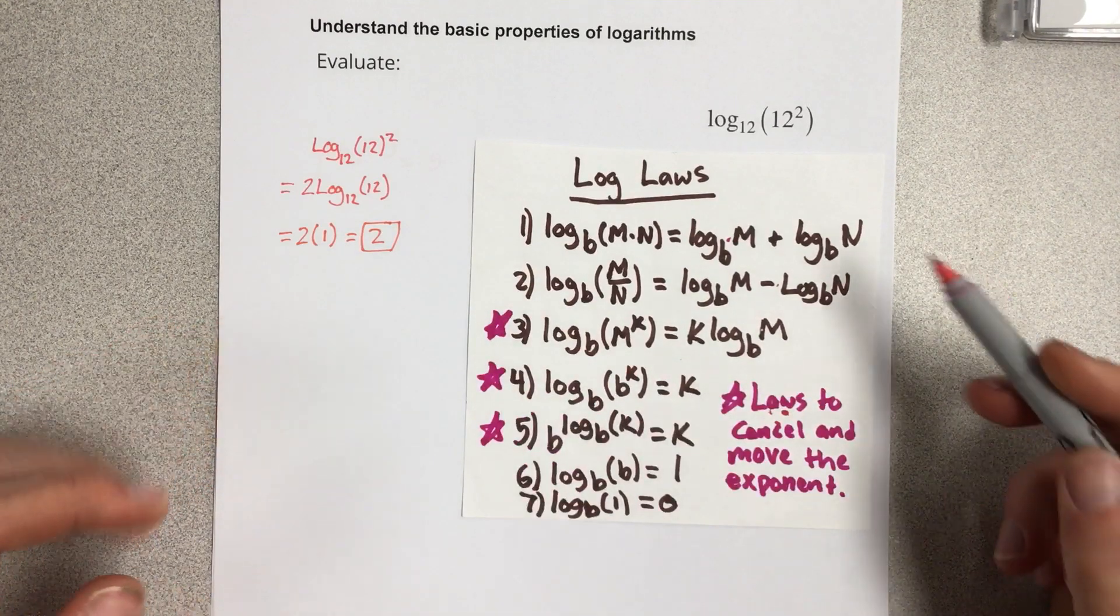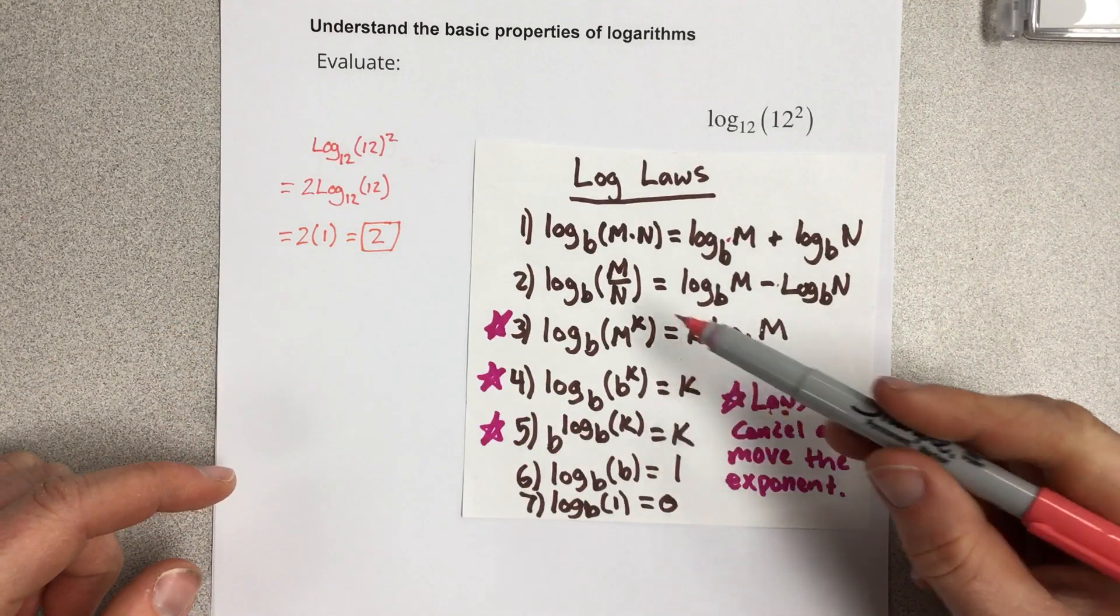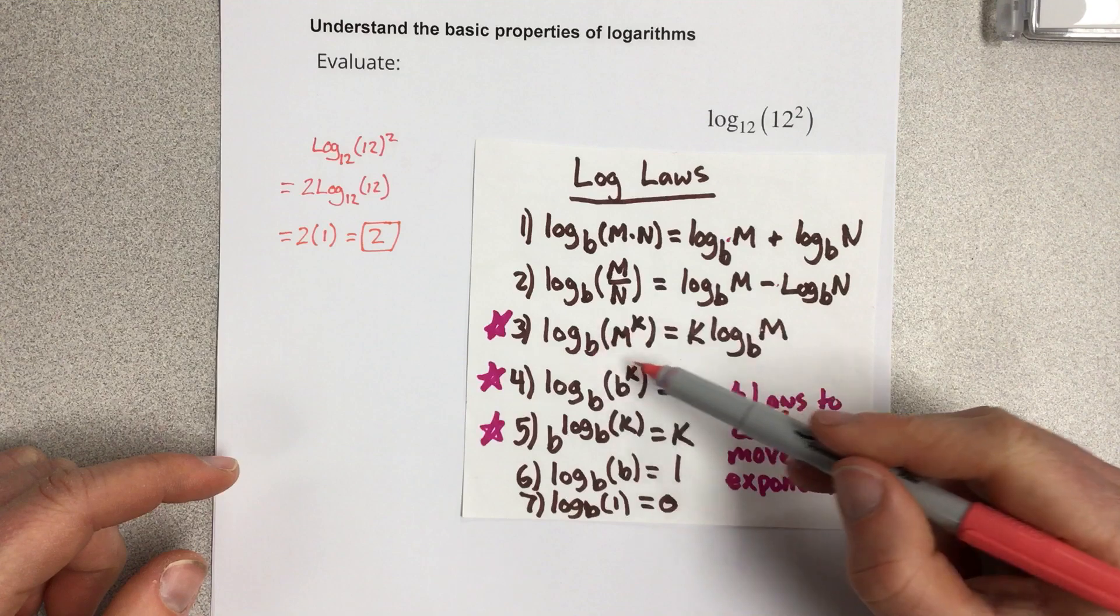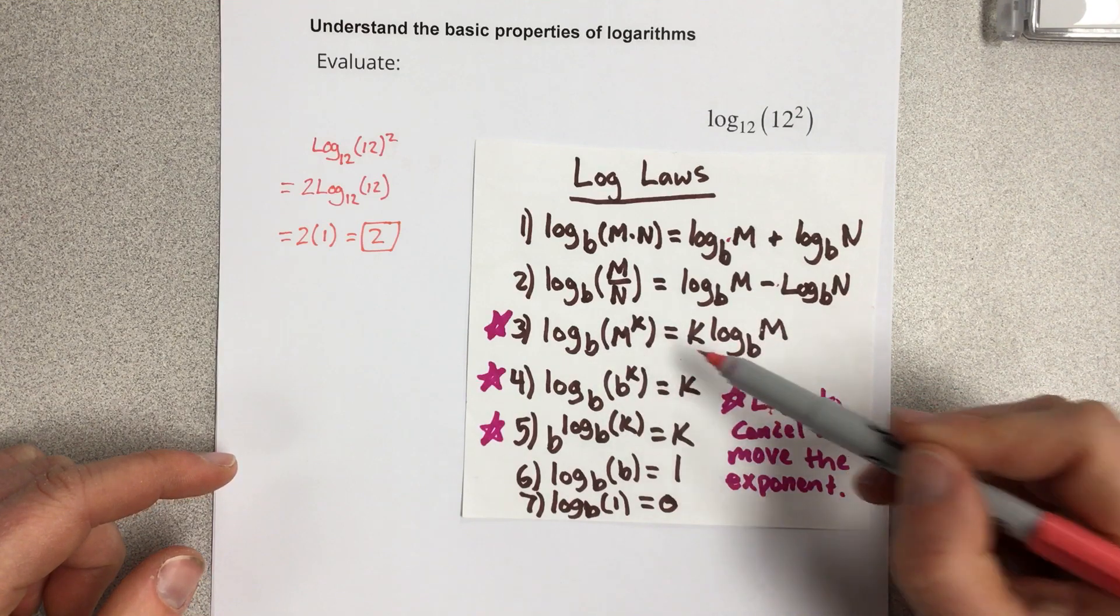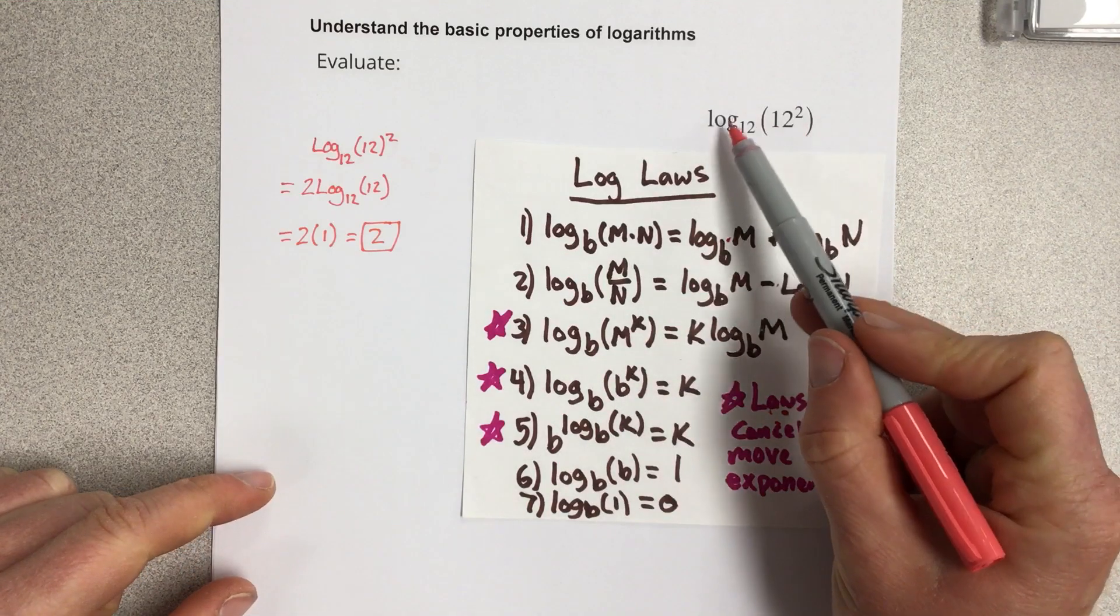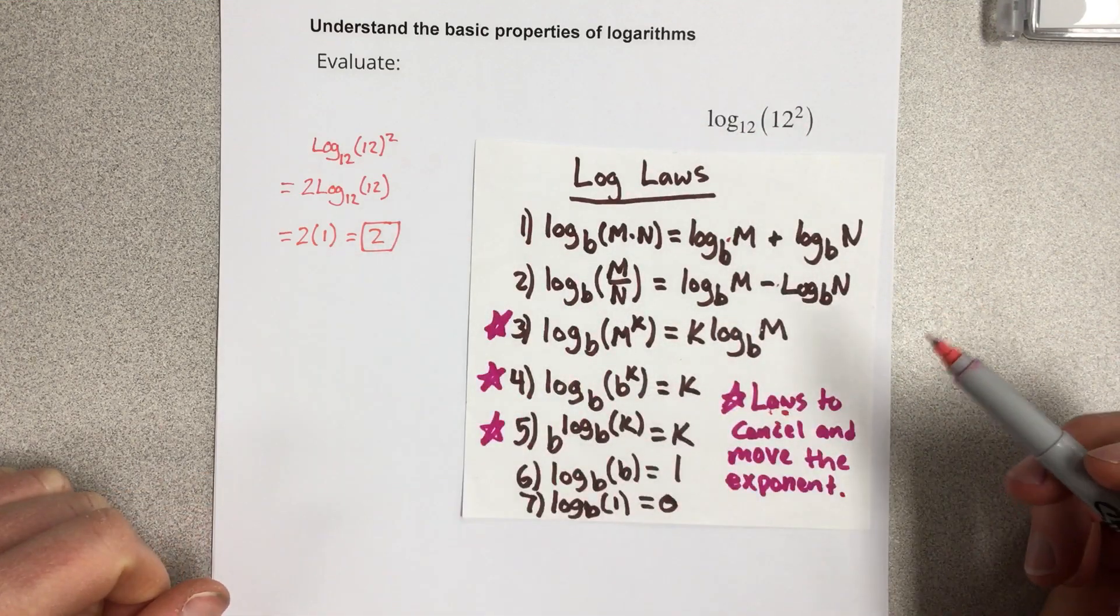So if I use the combination of the cancellation law and this exponent rule here, I think they call it the power rule for logarithms, I can end up canceling this whole logarithm out to a value of 2.